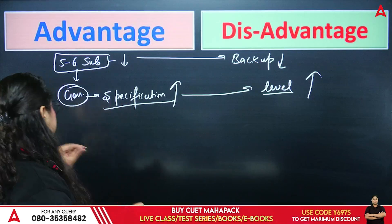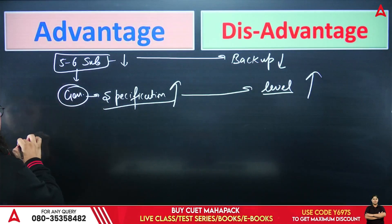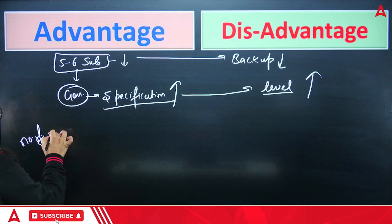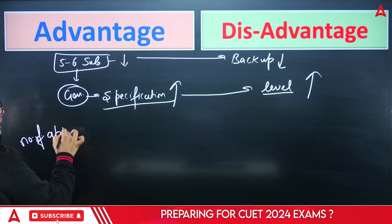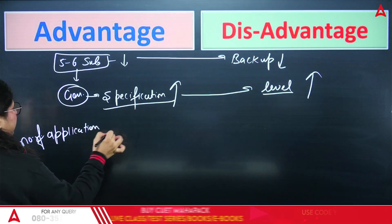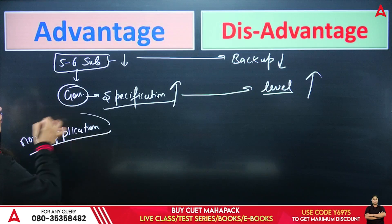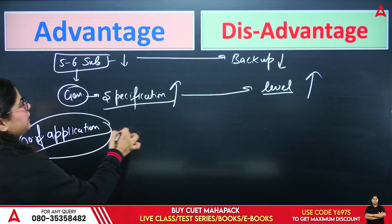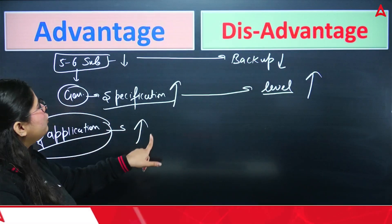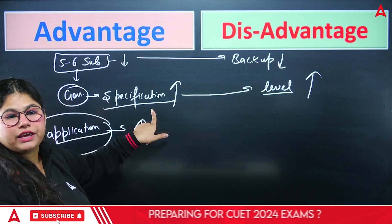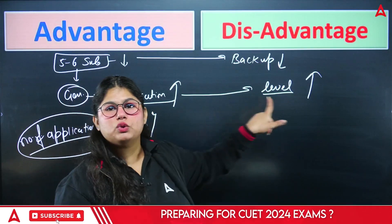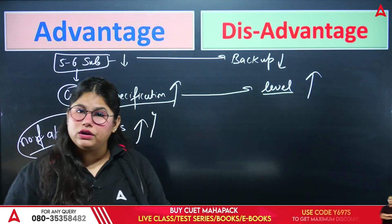The second problem is that the number of applicants is increasing every year. Your competition is increasing. The number of applications will increase, and applicants will improve their specification because the level of the exam will increase.